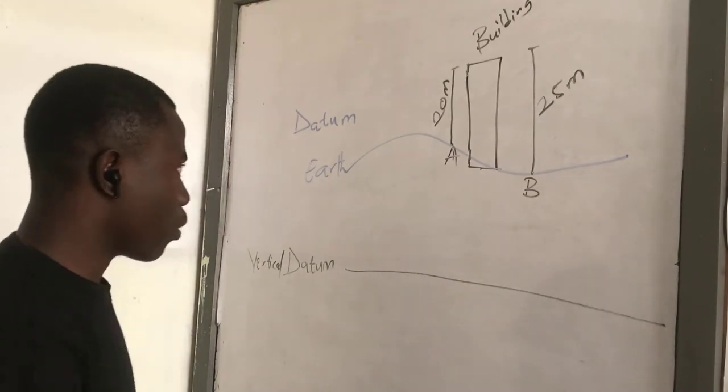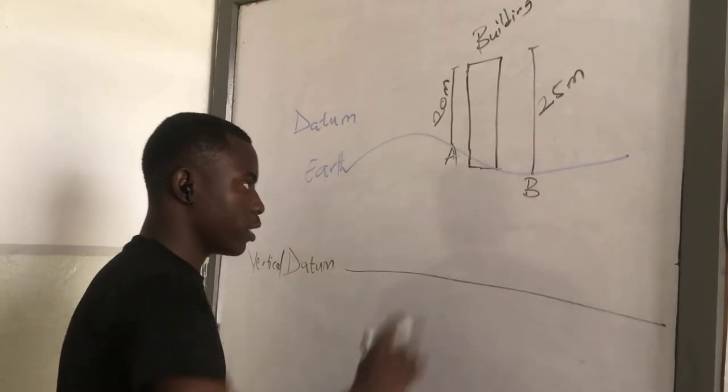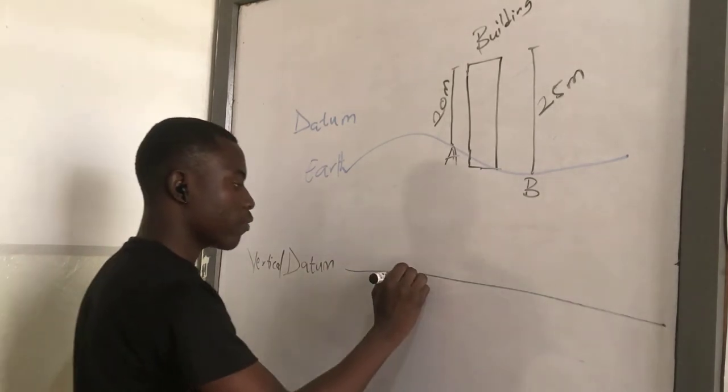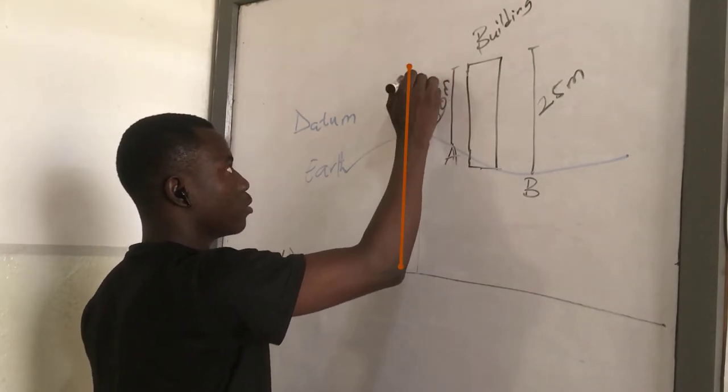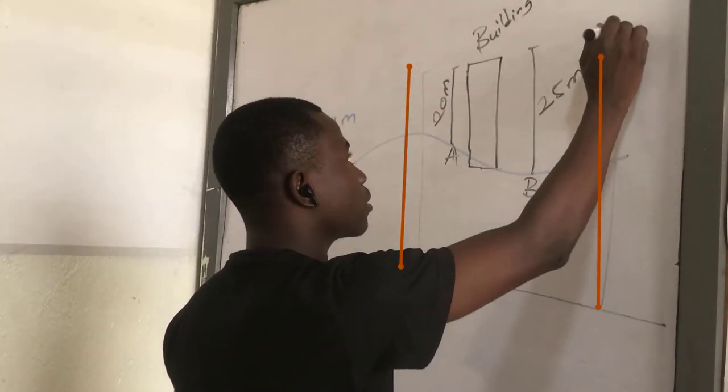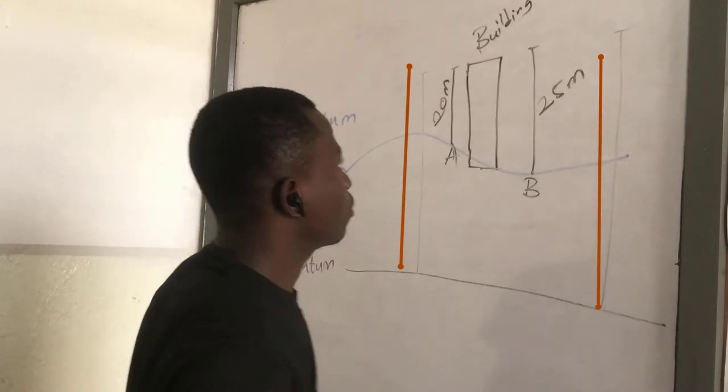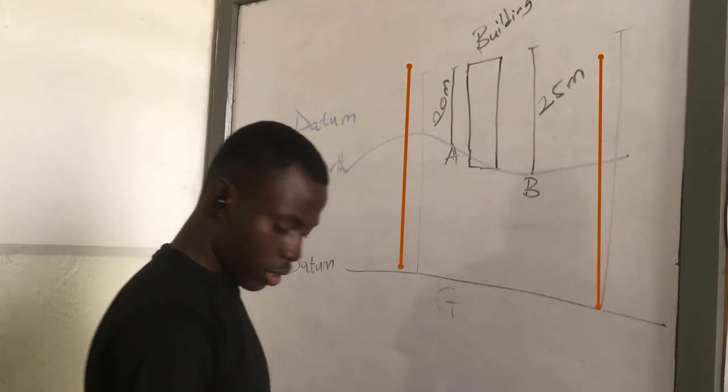We have agreed that if student A and student B are going to measure the same building, then they should both start from the same ground zero. So they should both start from the same ground zero, like this. So this is our ground zero.